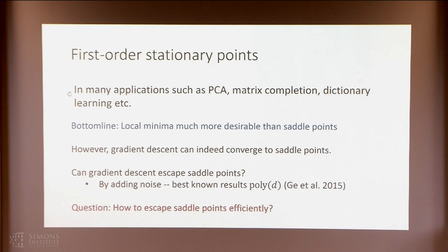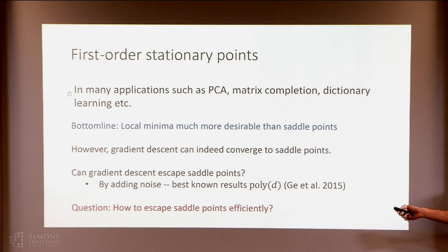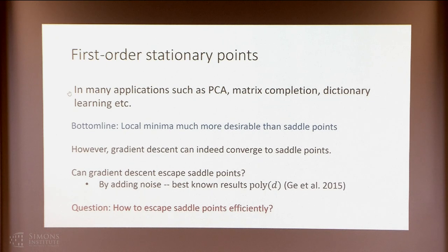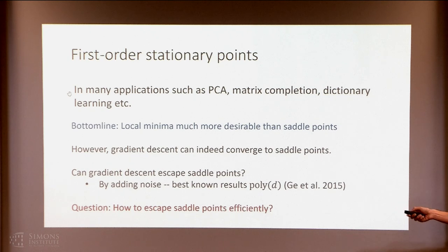The bottom line is that local minima are much more desirable to converge to compared to saddle points. Gradient descent can indeed converge to saddle points and not local minima. A natural question is whether we can make gradient descent escape saddle points and only converge to local minima. In prior work by Ge et al., they show that by injecting noise into gradient descent updates, gradient descent can escape saddle points, but their result requires at least polynomial in D number of iterations. The question we ask is whether it is possible to do this more efficiently without this poly-D dependence.